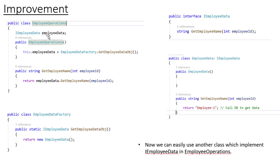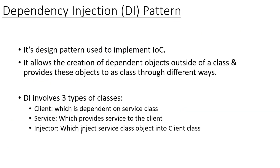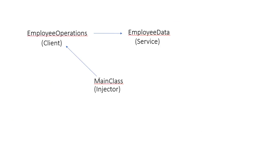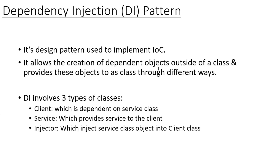Currently, the client itself is creating the object of the service class. But according to the DI pattern, we should have a separate Injector class that injects the object into the client class. This injector can be any class — even the main class — which will inject the EmployeeData object into the client. So rather than creating the object inside the client class, we inject the service class object from the injector class.